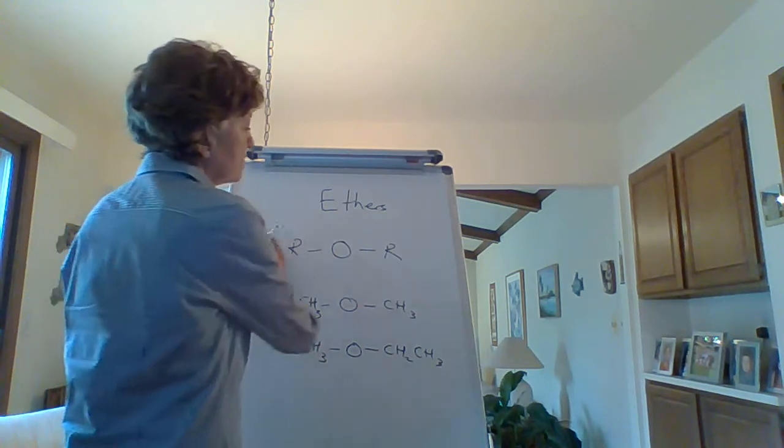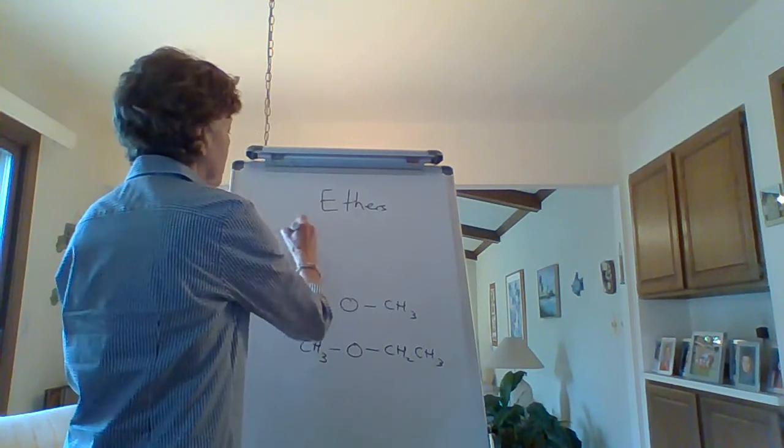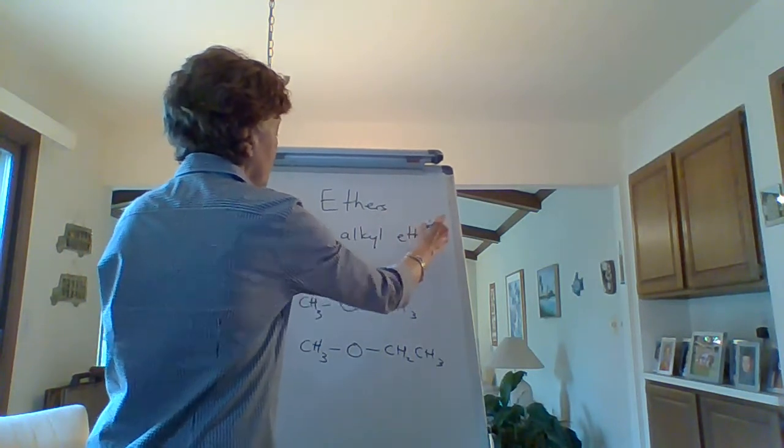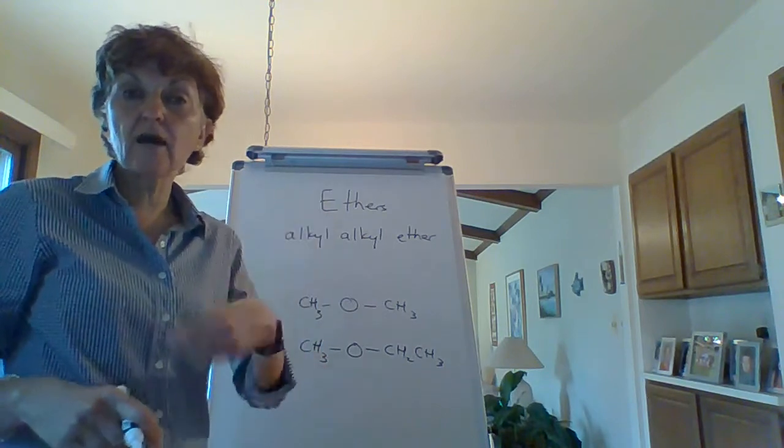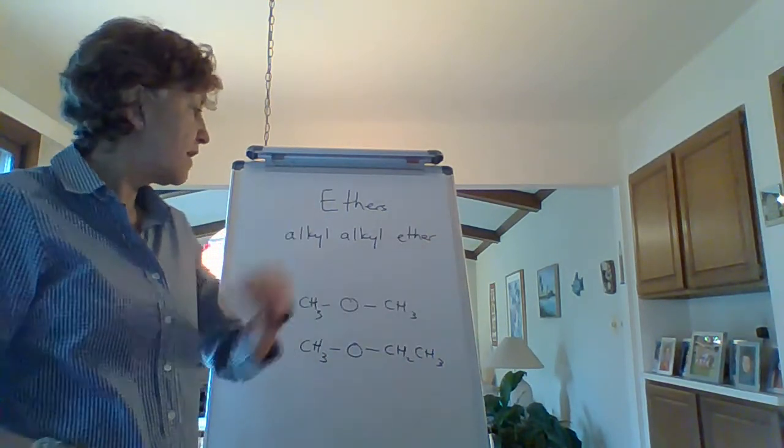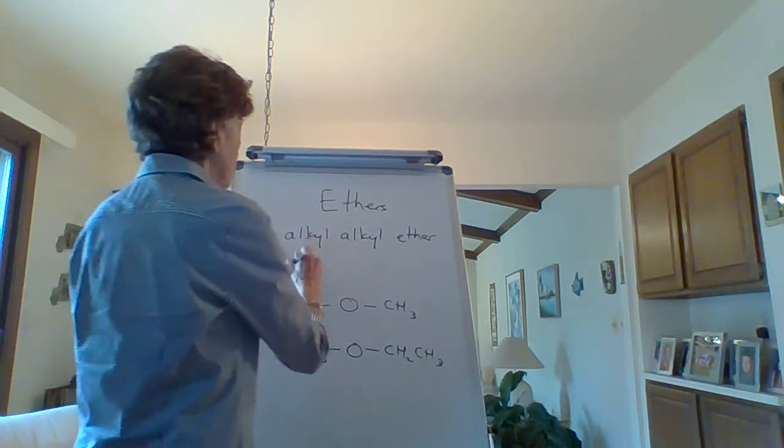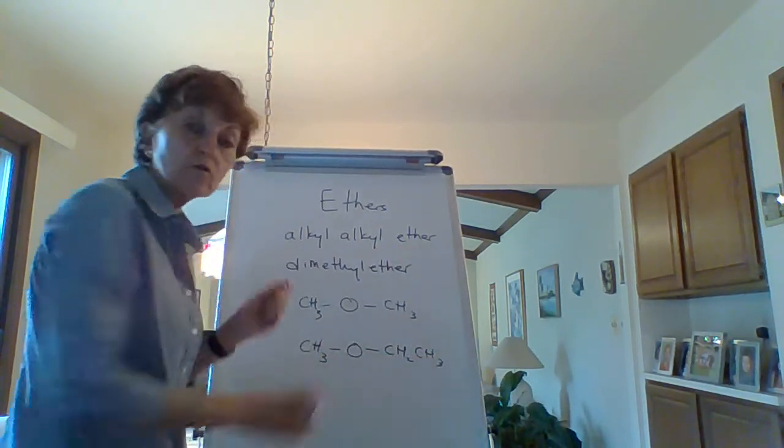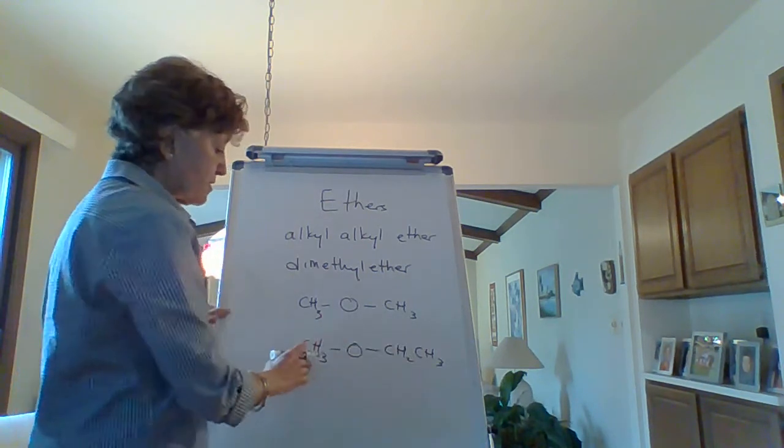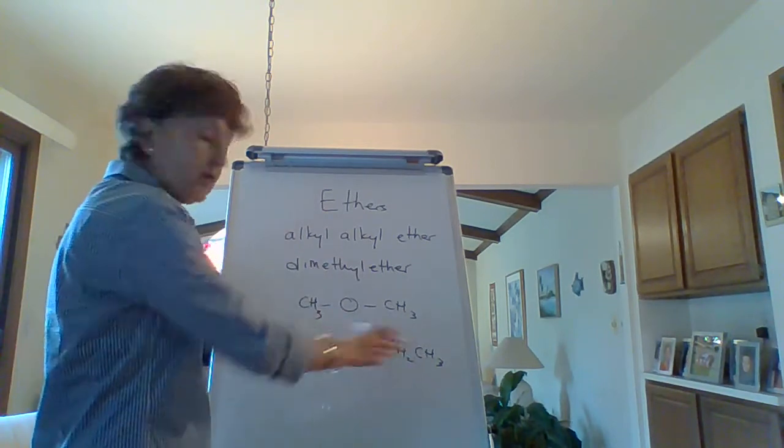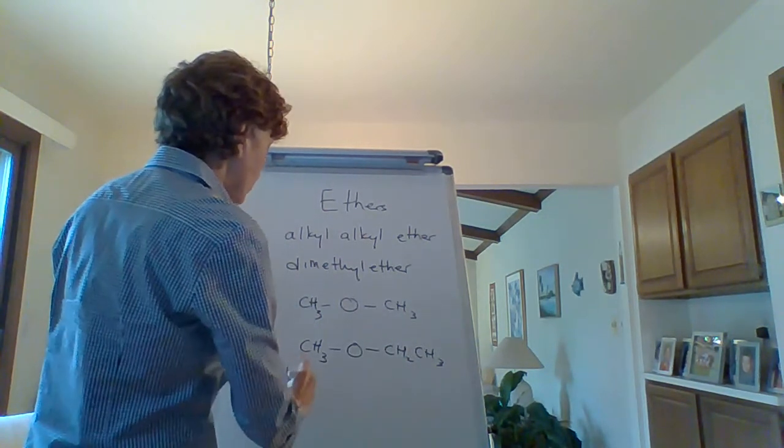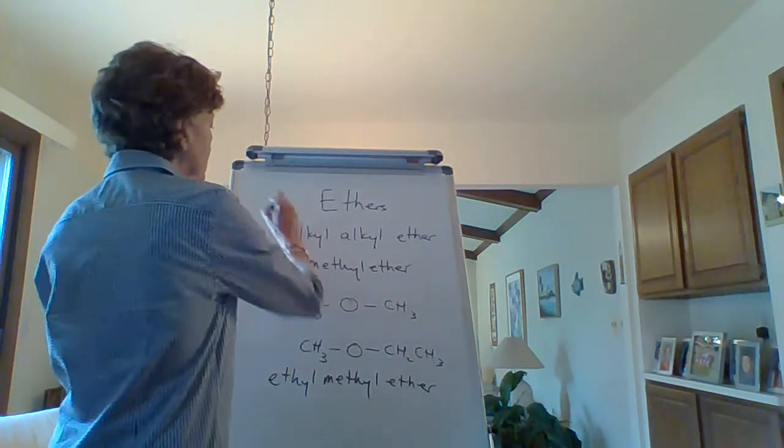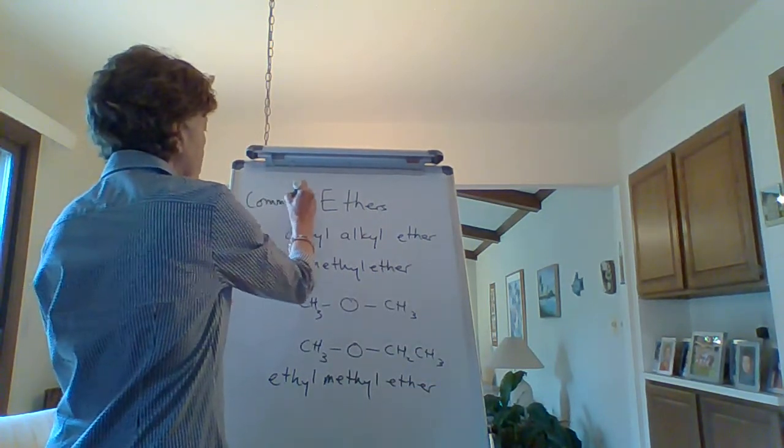Let's name ethers. Using common names for short ethers, you name one alkyl group, then the other alkyl group, then write the word ether. If the two alkyl groups are exactly the same, you say di-whatever-ether, like dimethyl ether. If they're different, like ethyl and methyl, you alphabetize them: ethyl methyl ether. This is common naming.